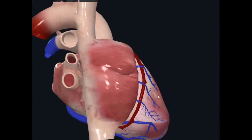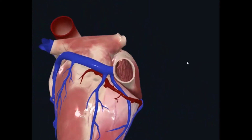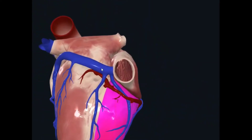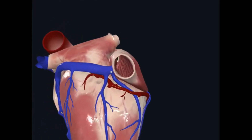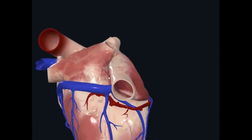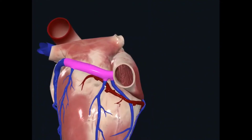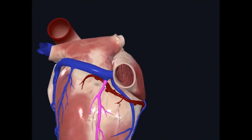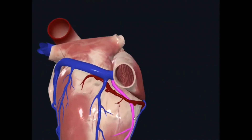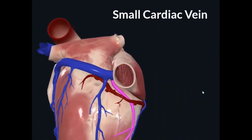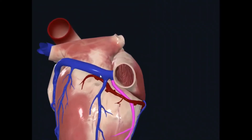You will see the right end of the coronary sinus on its inferior surface, and this right end of the coronary sinus has its opening inside the right atrium. Apart from the great cardiac vein, there are multiple small tributaries as well. This is known as the middle cardiac vein. Then you have one more vein here, which is known as the small cardiac vein.